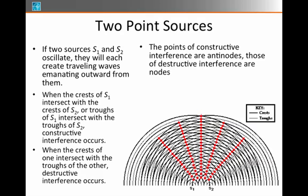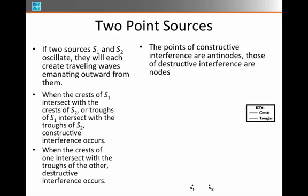It's also interesting to notice that the zones of destructive interference occur along lines, and they occur partway in between the lines of constructive interference, or the antinodal lines. The lines where destructive interference occurs are called nodal lines.